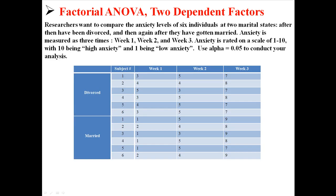Here's our example. Researchers want to compare the anxiety levels of six individuals at two marital states — after they have been divorced, and then again after they have gotten remarried. Anxiety is measured at three times: week one, week two, and week three. Anxiety is rated on a scale of one to ten, with ten being high and one being low.